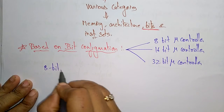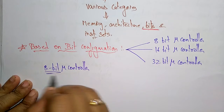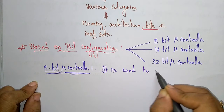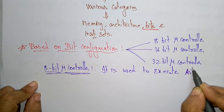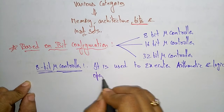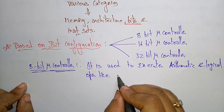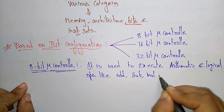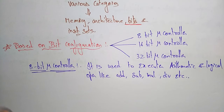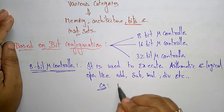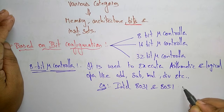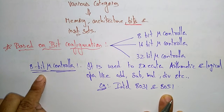The 8-bit microcontroller is used to execute arithmetic and logical operations such as addition, subtraction, multiplication, and division. The examples of 8-bit microcontrollers are the Intel 8031 microcontroller and the 8051 microcontroller.